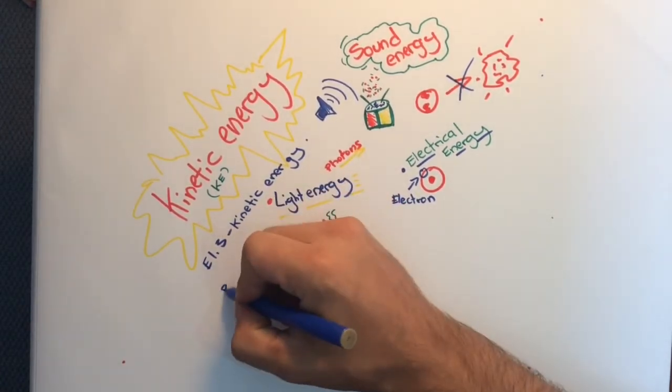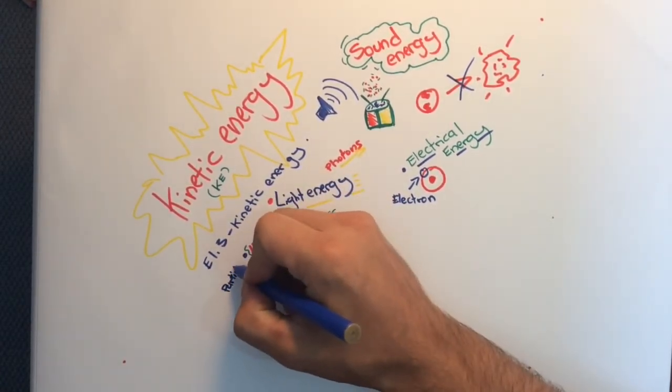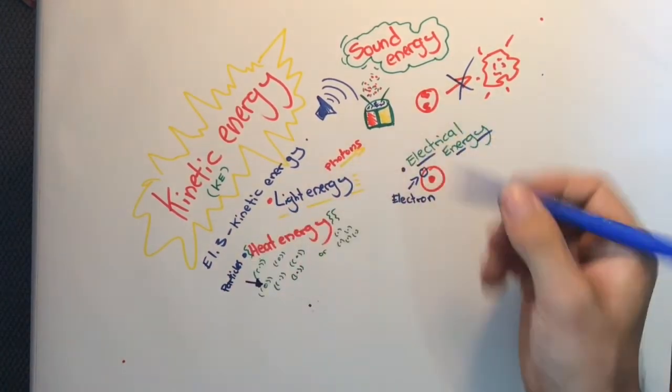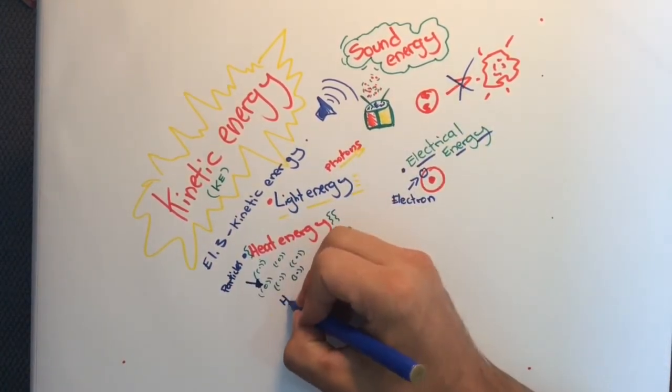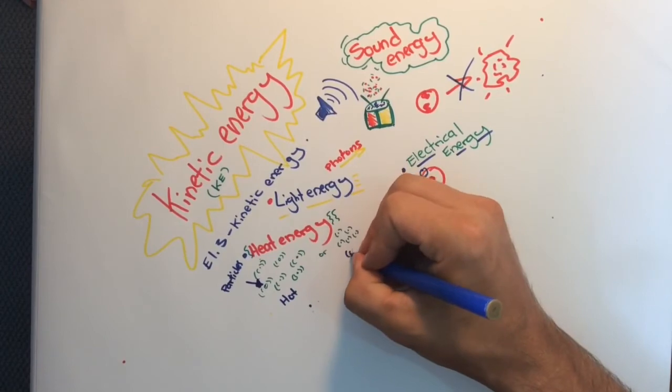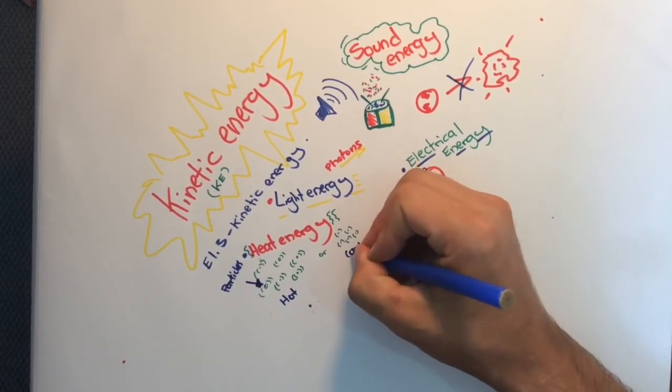Electrical energy is considered as kinetic energy because electrons, which are a type of subatomic particle which make up an atom, are moving in electrical currents.